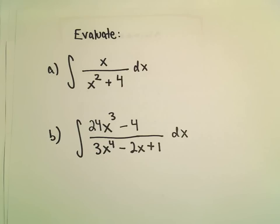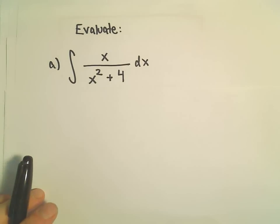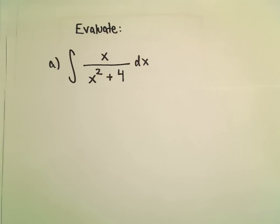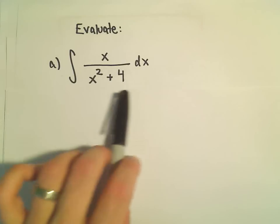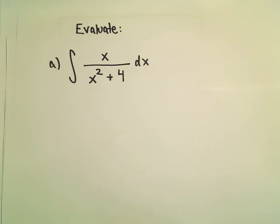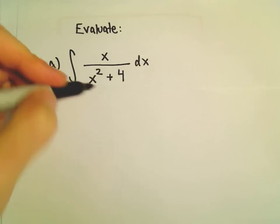To start off with, we have x over x squared plus 4. If I was looking at this problem, the thing that I would think about is I see something to the second degree in the denominator and something to the first degree in the numerator, and that makes me think maybe a little u substitution will work here.